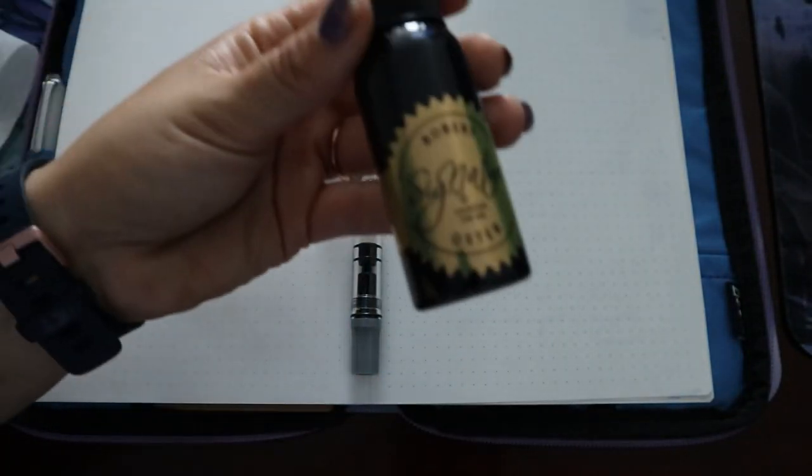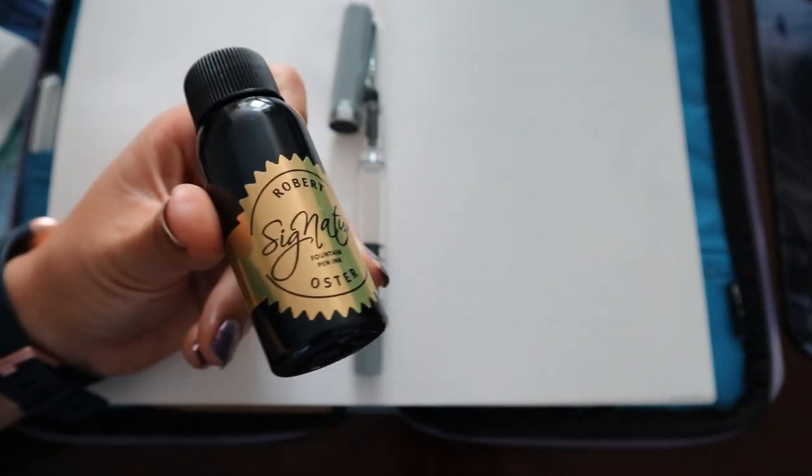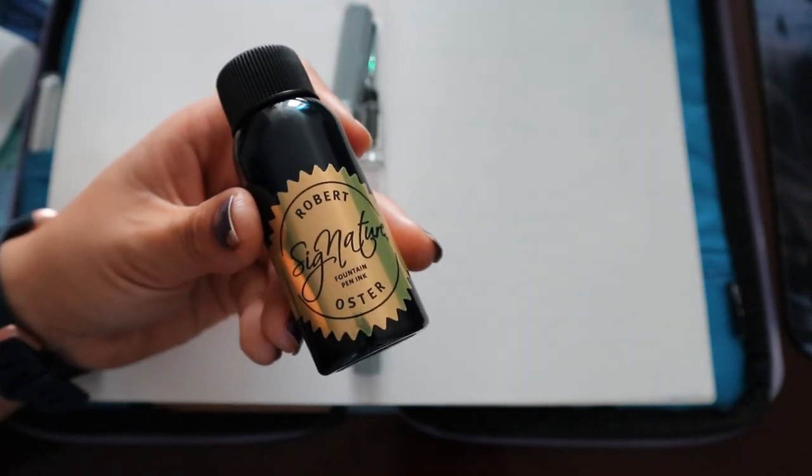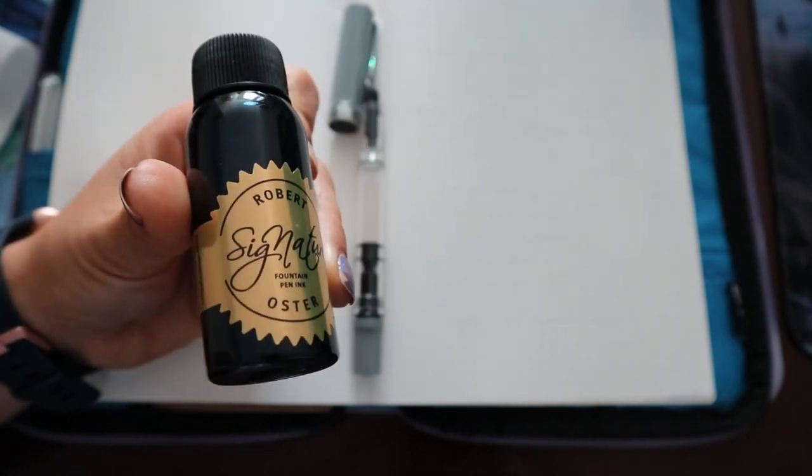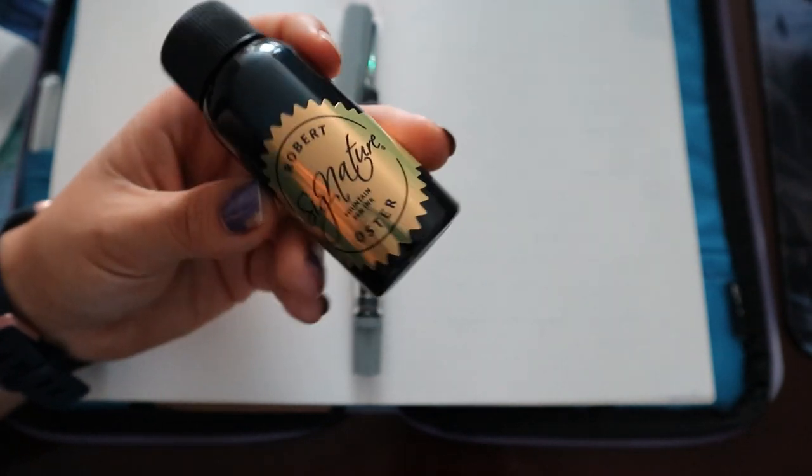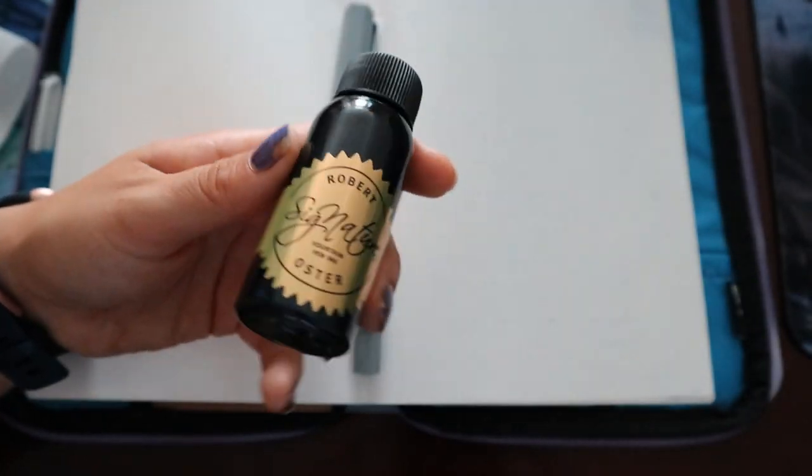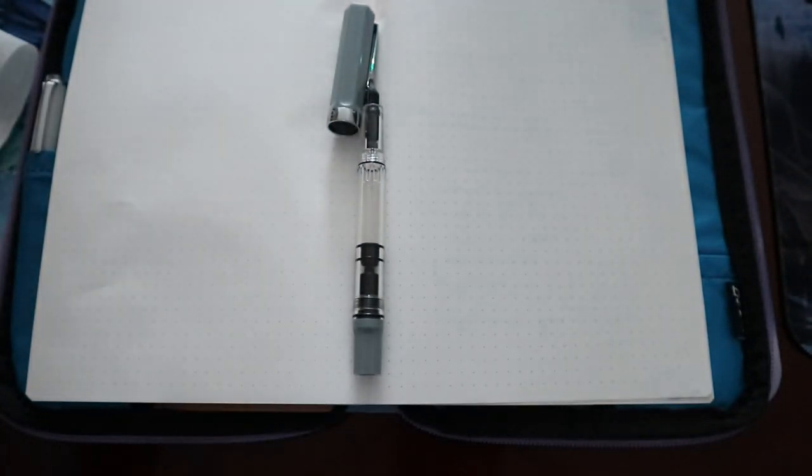And with that, I also got a Robert Oster ink in Bondi Blue. I was looking for Fire and Ice because that's one of the Oster inks I love and the bottle I had was at my fiance's and we spilled it. We like dropped it all over the counters. So we needed a new bottle but I couldn't get it, so I went for Bondi Blue.